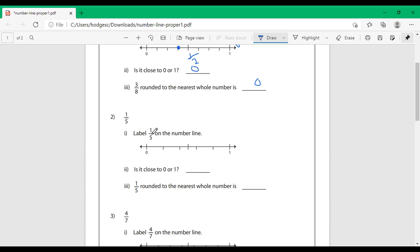Labeling 1 fifth on the number line puts it right here. We are closer to 0 than we are to 1. So, 1 fifth rounded to the nearest whole number is 0.